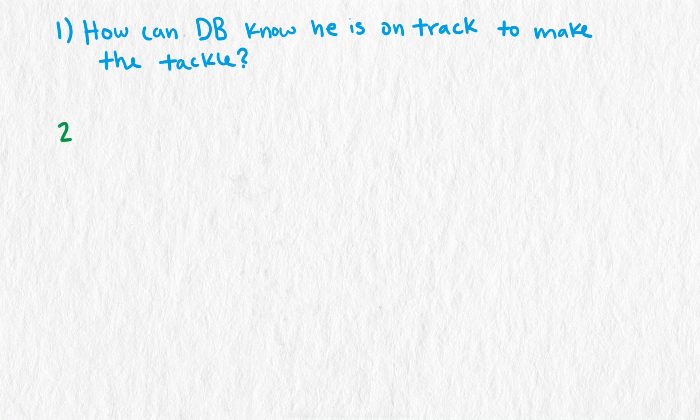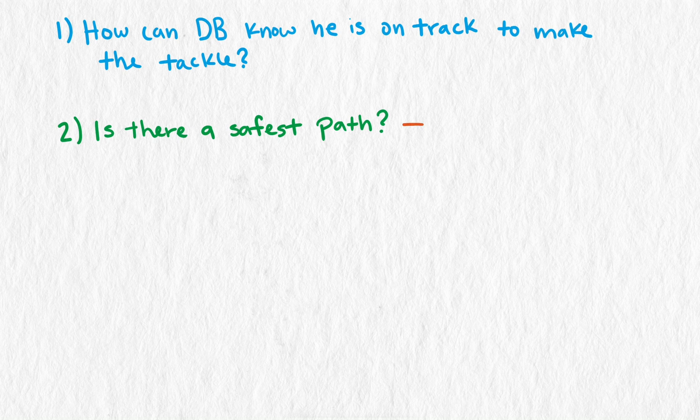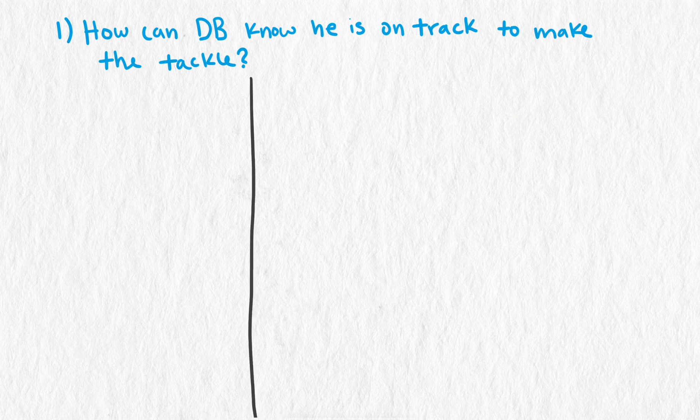At this point, there are two intriguing questions. Is there a way for the defensive back to know whether he's on track to make the tackle during the pursuit? And two, if there's a riskiest path, is there a safest path? We will address the second question about the safest path in another video because it uses a different line of reasoning. So let's turn to the first question. How should the DB know if he's on a collision course?